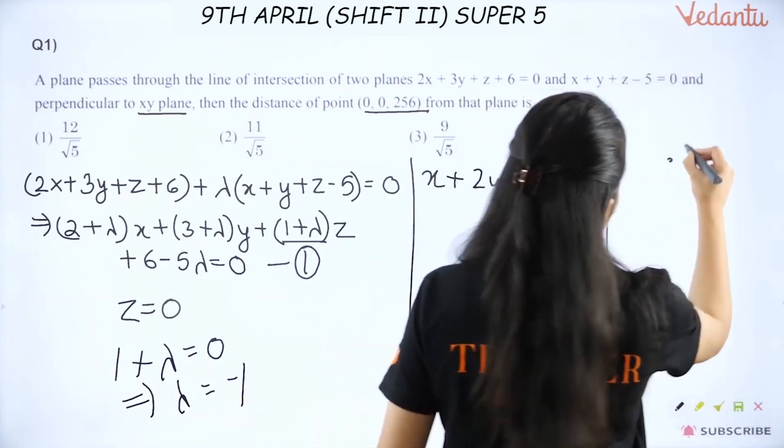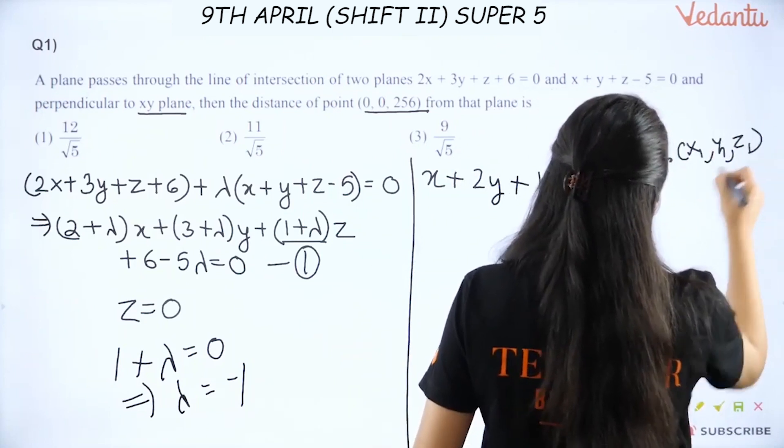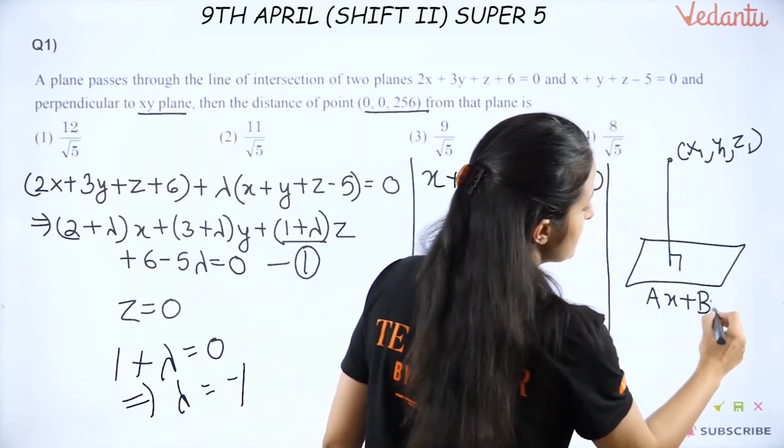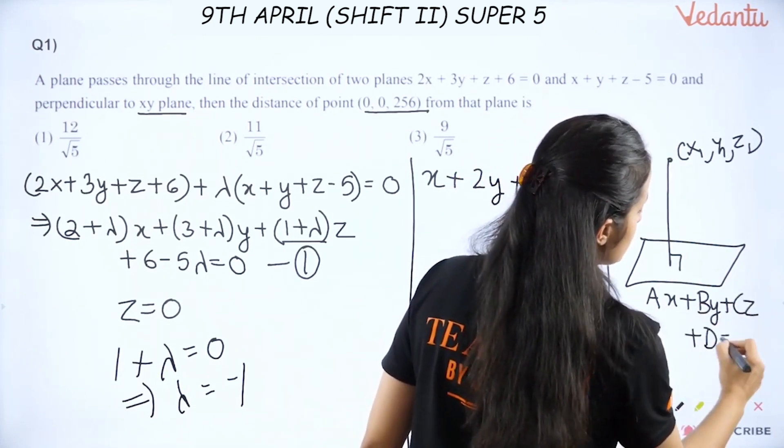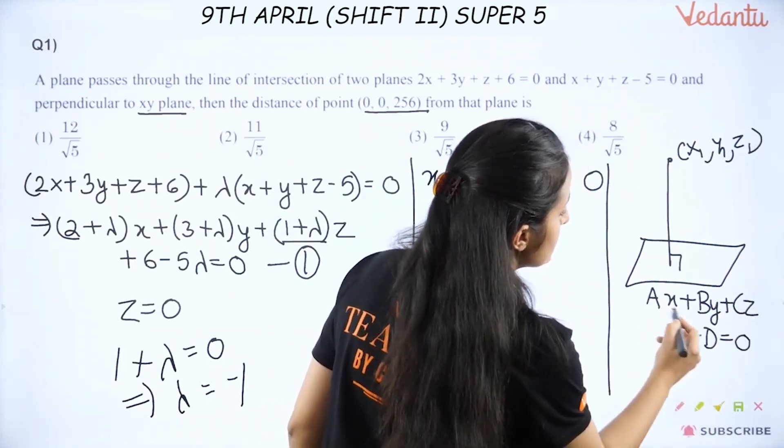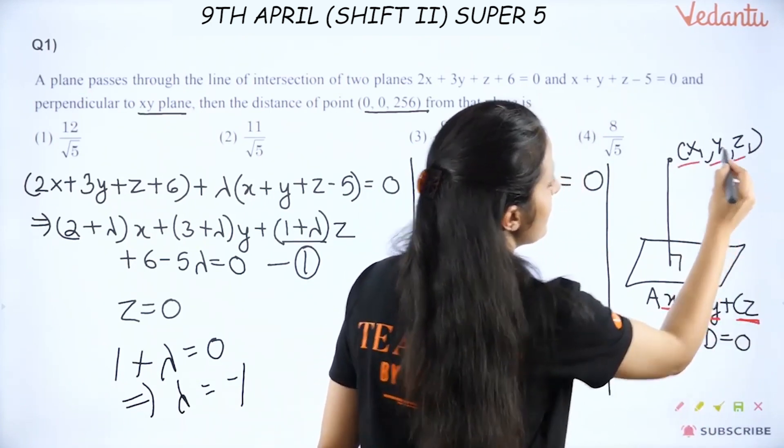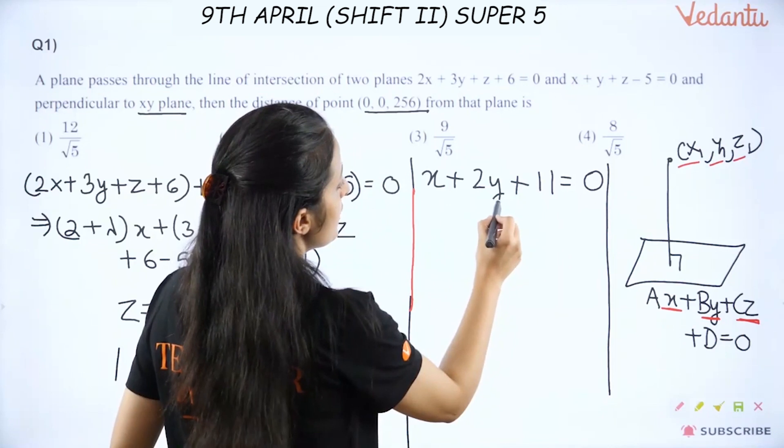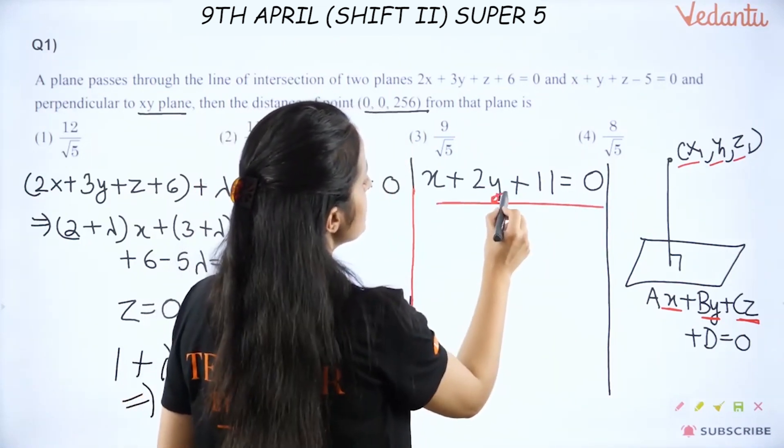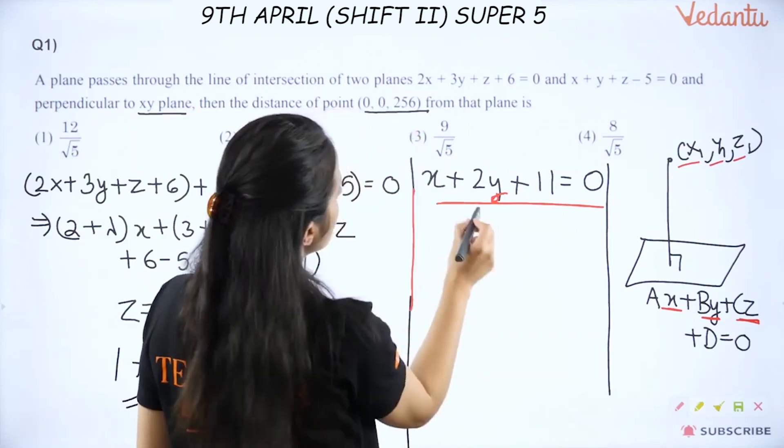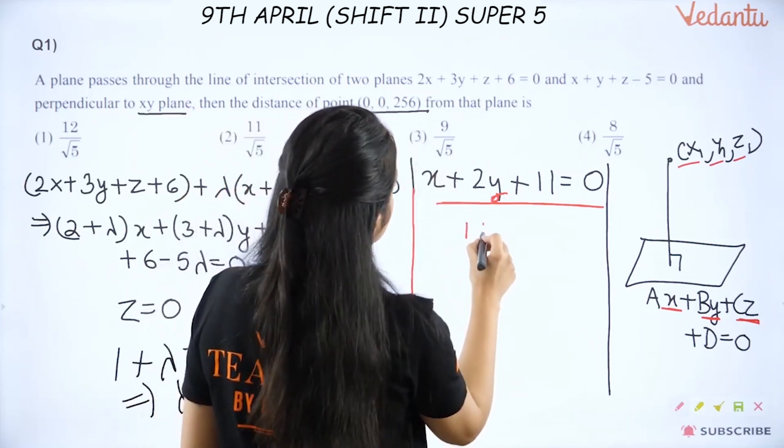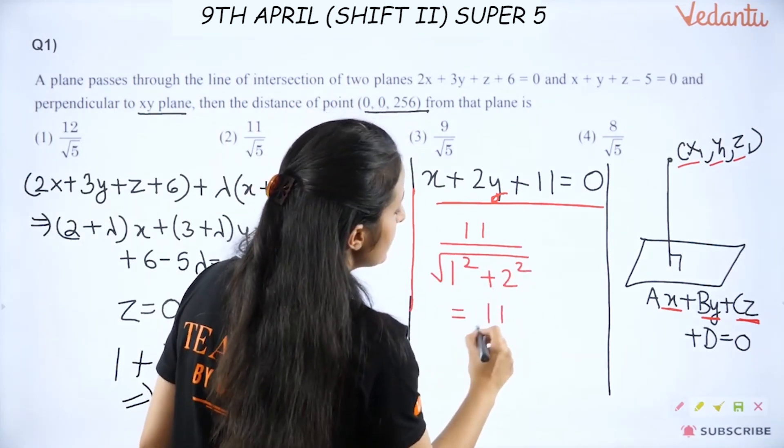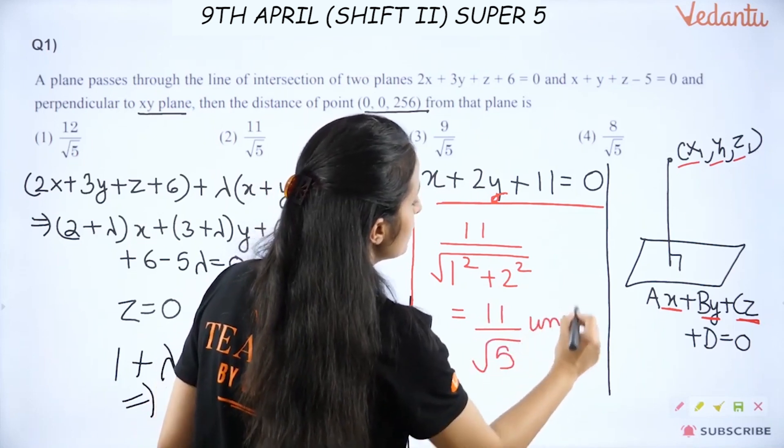Remember, if I have the point x1, y1, z1 and it drops a perpendicular here on the plane ax + by + cz + d = 0, you replace x, y, z with x1, y1, z1 and divide it by square root of a² + b² + c². So now this is the equation of the plane. It will be 0 + 0 and here 11 upon square root of 1² + 2². So it is simply 11 by root 5 units.